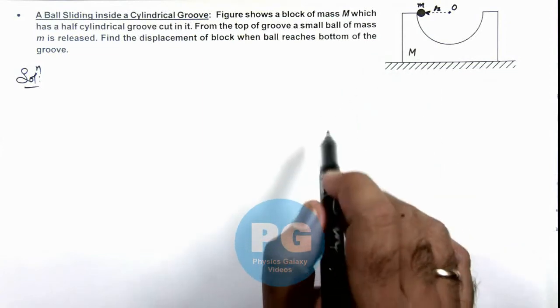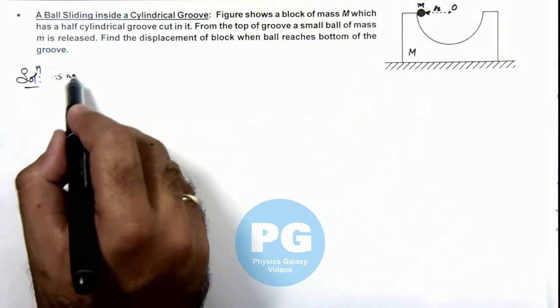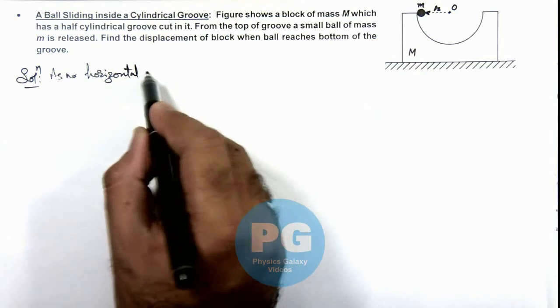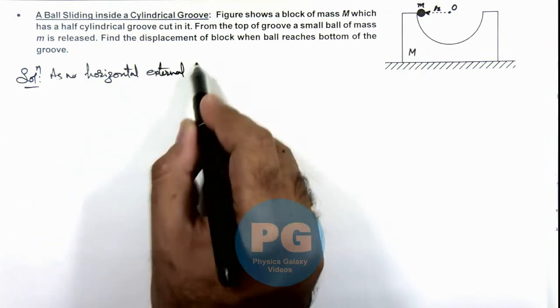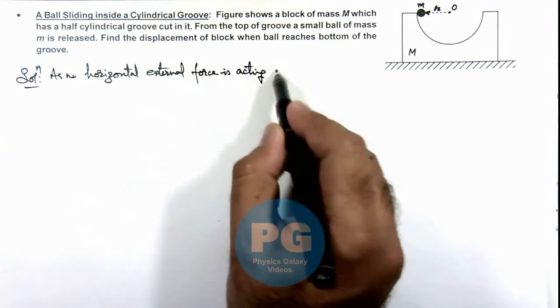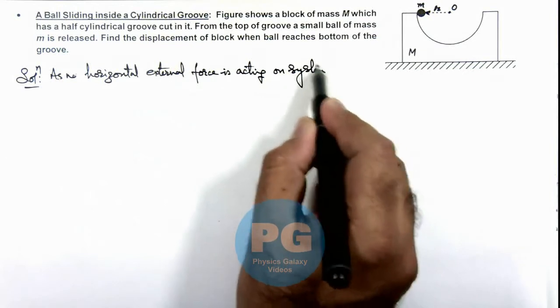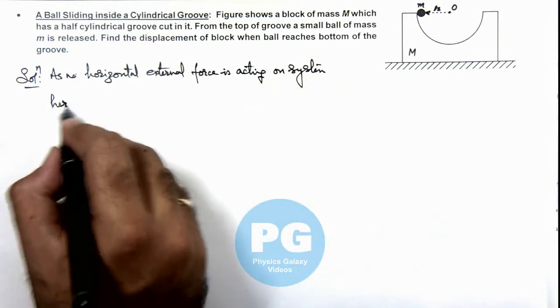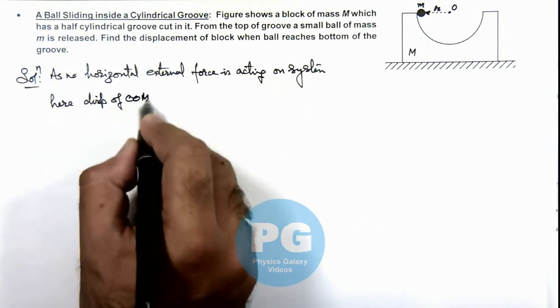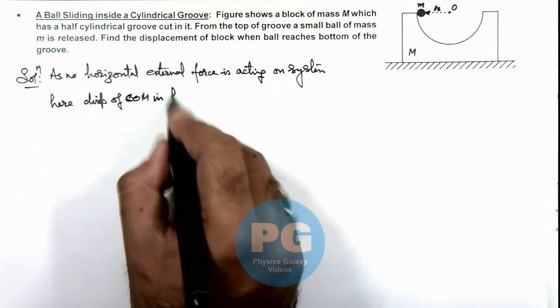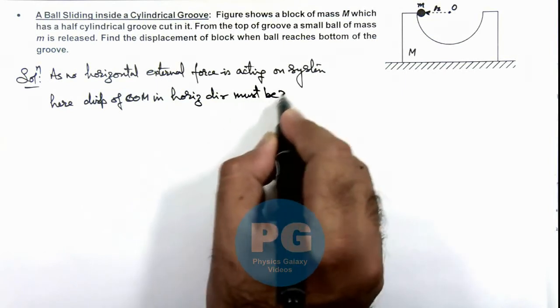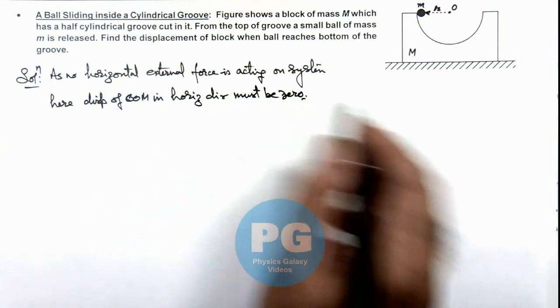So here we can write: as no horizontal external force is acting on system, displacement of center of mass in horizontal direction must be zero. That means center of mass will be kept at rest.